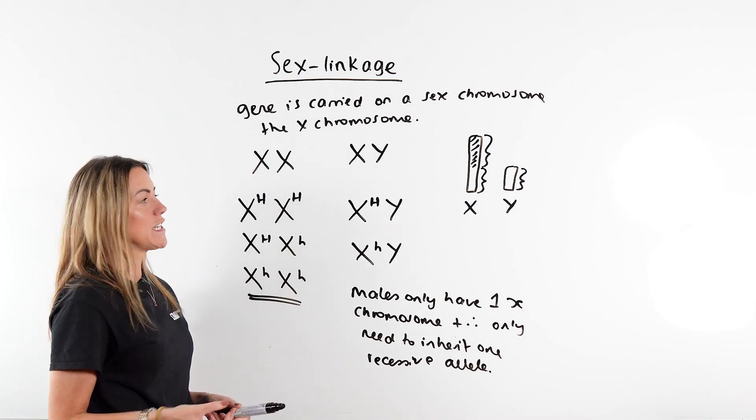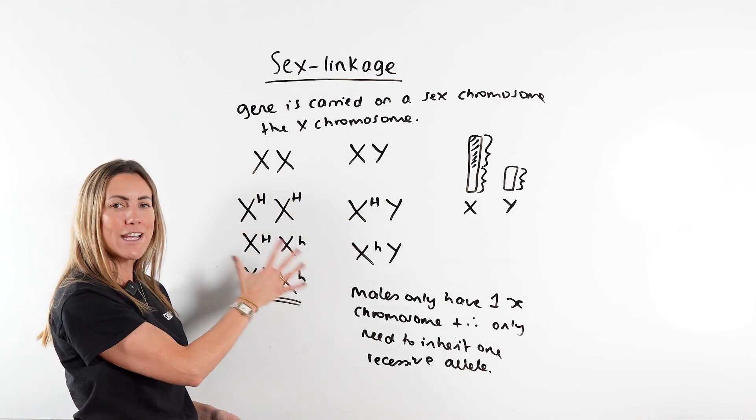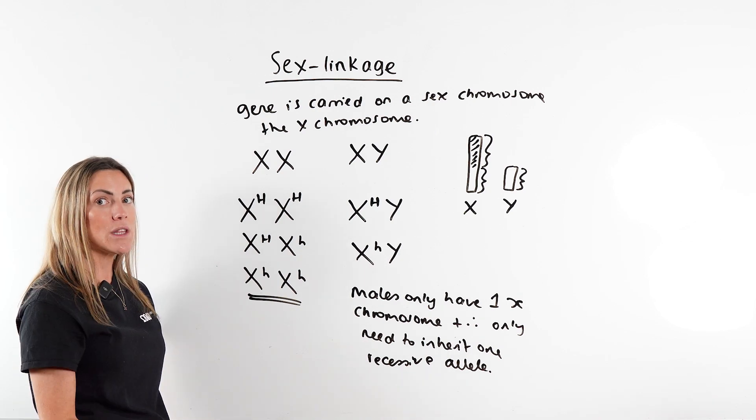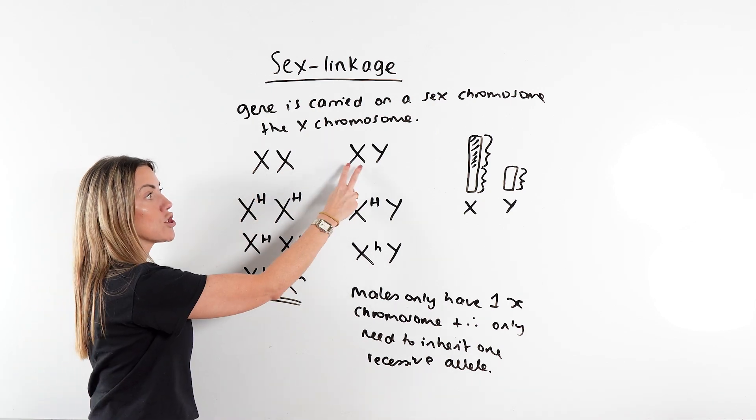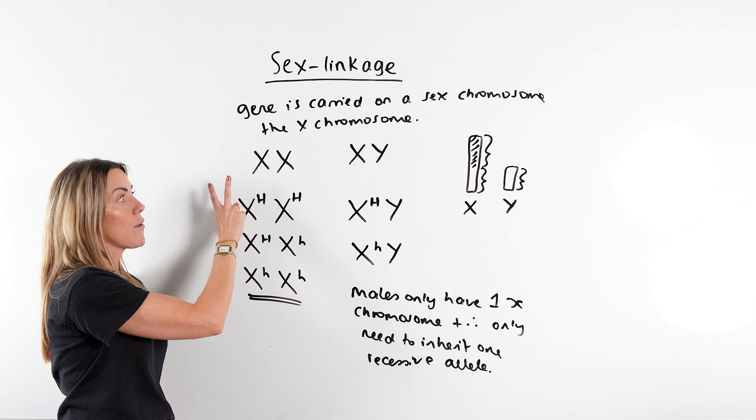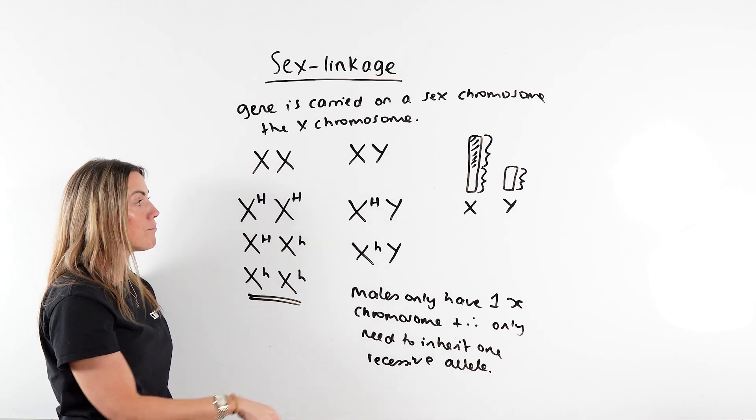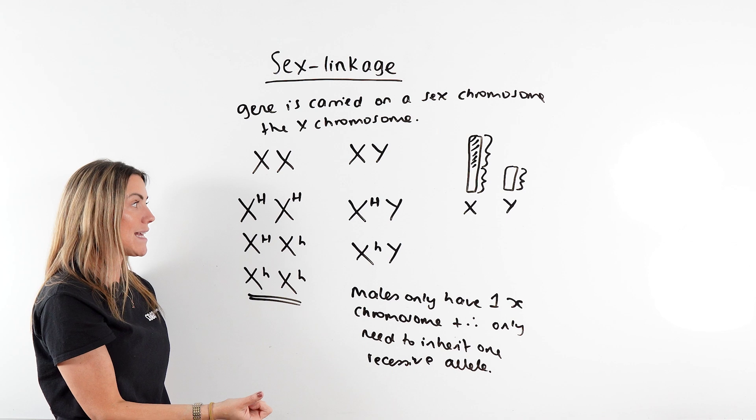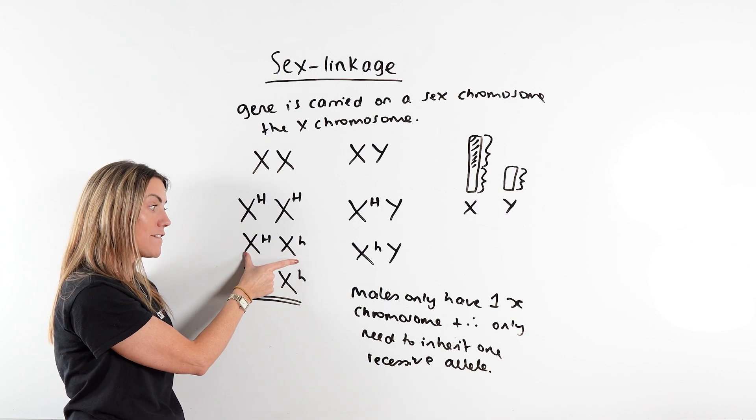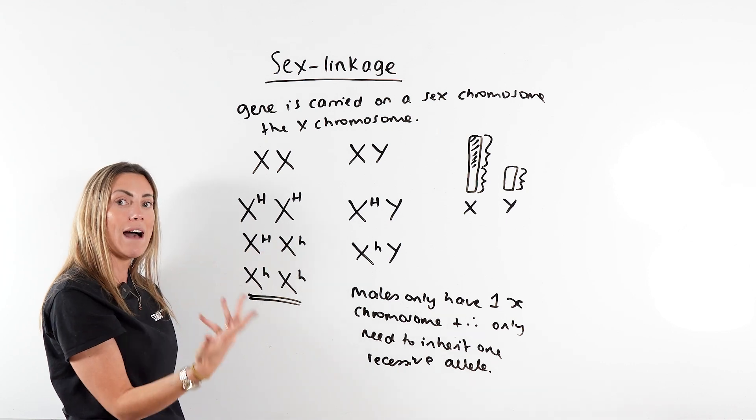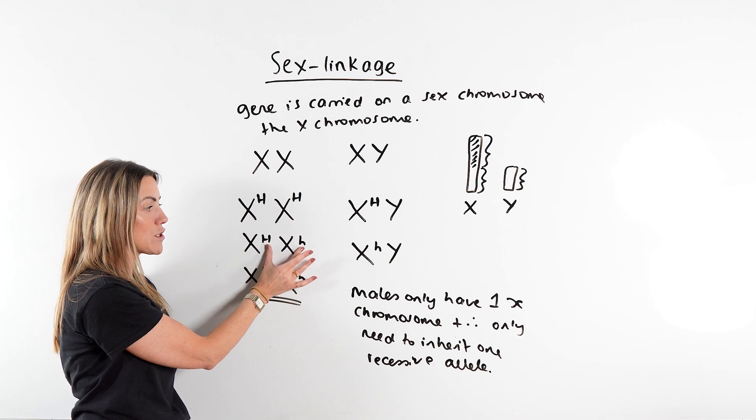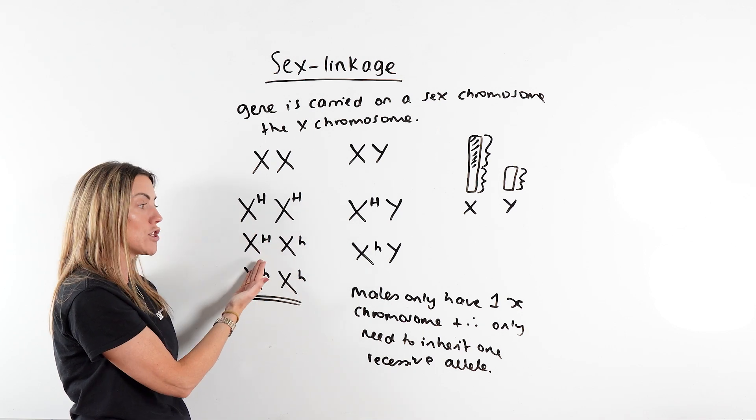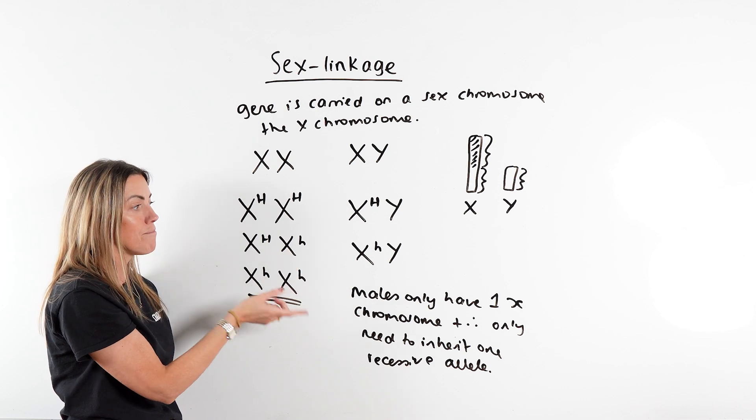Before we finish this video, let's just talk about how we actually write all of this. If the allele is sex-linked, if they tell you in the question it's sex-linked, then you must show the sex chromosomes. So XX for female, XY for male. Then you put the alleles as superscript letters. Remember that if it's a female with two X chromosomes, each chromosome will have an allele. So you should have a superscript letter next to each X, and we can use the capital for the dominant and the lowercase for the recessive.